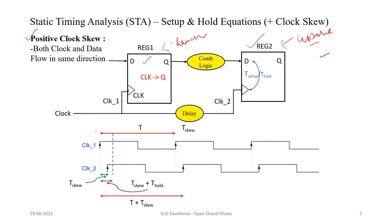If you see in the waveforms, this is clock 1 which corresponds to register 1, or our launch flop. This is the launch edge. This is clock 2 of our capture flip flop, and the clock edge at which the data is captured is our capture edge. There is a delay between clock 1 and clock 2 which is nothing but t_skew, coming because of the delay present between the clock 1 and clock 2 points.